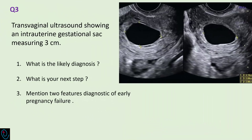In the third question, there is a transvaginal ultrasound showing an intrauterine gestational sac measuring 3 cm, and nothing else could be visualized inside the gestational sac. What is the likely diagnosis? What is your next step? And mention two other feature diagnostics of early pregnancy failure.